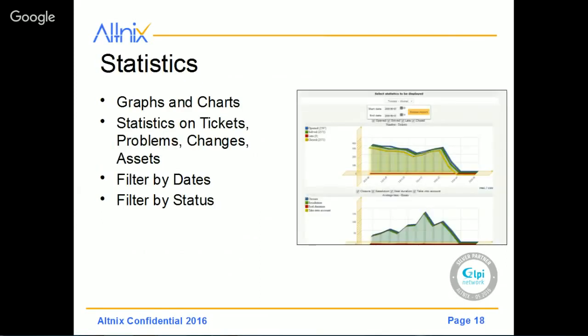There is also a statistics module where you can view some graphs and charts. It covers tickets, problems, changes, and assets. There are other modules you can add to this basic GLPI to get more in-depth analysis of different types of data, reports, and statistics. In this module, you can also do filtering by dates and duration — it could be a daily or weekly report, or a custom date report. You can also filter based on status types of tickets, problems, and assets.